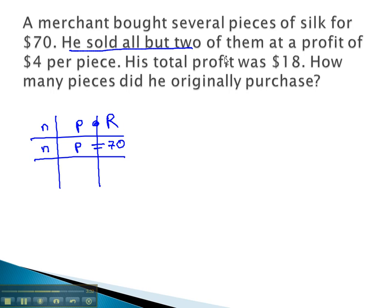He sold all but 2. This means the number has decreased by 2. At a profit of $4 per piece. This means the price has increased by $4. His total profit is 18. This 18 is in addition to the expense of 70, so his total revenue that he brought in was 88.